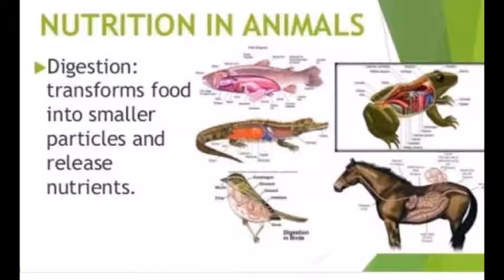Chemical digestion means breakdown of large insoluble molecules into soluble form. Mechanical digestion does not make food molecules soluble, but chemical digestion does — enzymes work on the food and change it chemically.